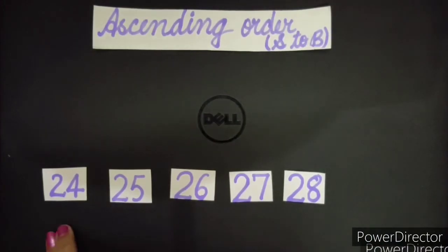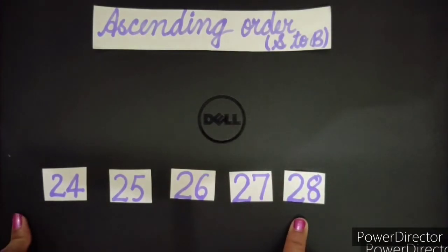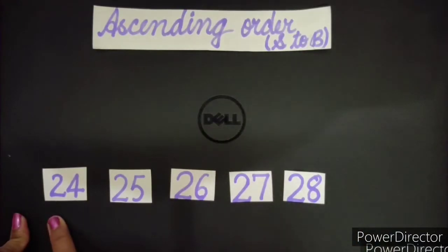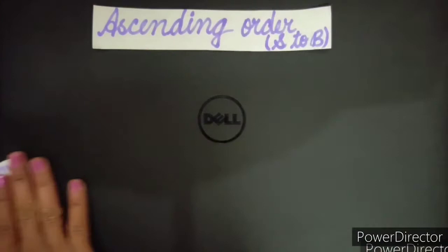Then at last, 28. Now this order is increasing order or ascending order. Kaunsa order hai? Increase hota hua order, badhata hua. 24 se bada no. 25, 26, 25 se bada, 26 se bada, 27, 27 se bada, 28. So this is ascending order. Small to big. Right? Let's take one more example.